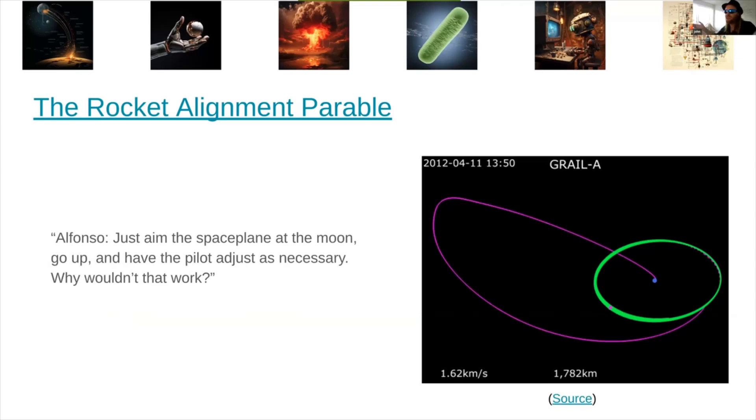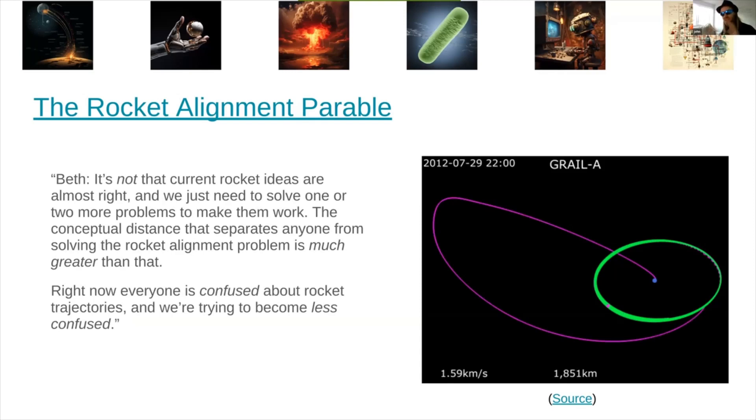Continuing with the analogy, Alfonso says, can't we just aim the space plane at the moon and go up and have the pilot adjust as necessary? Like, why wouldn't that work? It's a very intuitive question. Like, couldn't you just, sure, the nose of the rocket won't stay pointed at the moon, but then you just adjust back and keep going? And the answer is, we know with actually getting to the moon, that will not work. This will go very badly if you do that. And part of the claim here is that, that's about how difficult alignment is. And we're not trying to argue that that's true right now. We're just saying this is an analogy to keep in mind of we're claiming without necessarily defending it at the moment, this is about how confused we are.